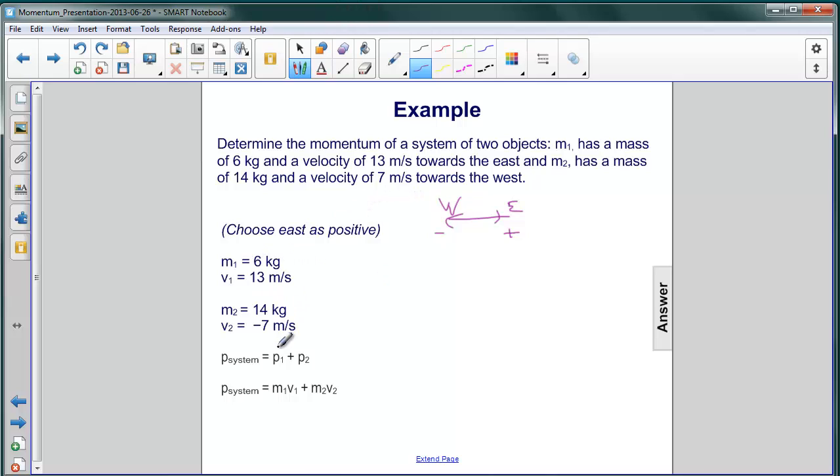So listed here are all the values that we've gleaned from the problem in terms of masses and velocities. And we know that the momentum of a system is simply the sum of the momenta of the objects. In this case, object 1 and object 2. The momentum itself is mass times velocity. So the momentum of the system is m₁ times v₁, its velocity, plus m₂ times velocity v₂.